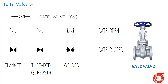Moving on to the first valve, the gate valve. This is the most important and common valve used everywhere. In P&IDs, if you find a symbol like this, it stands for a gate valve. This is the most common valve used in most industries.